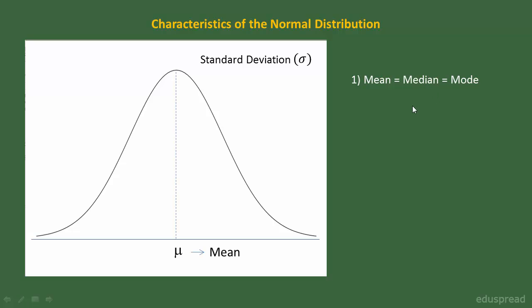Another characteristic of a normal distribution is that it is symmetric. By this, I mean in case of a normal curve, the area to the left of mean is equal to the area to the right of mean. So these two areas are equal. Or you can say the shape of the curve to the left-hand side of the mean is the mirror image of the shape of the curve to the right-hand side of mean. This is what we mean by a symmetric distribution.